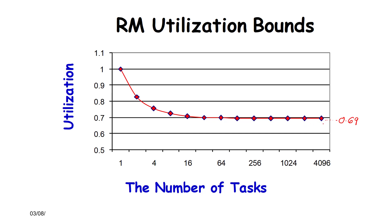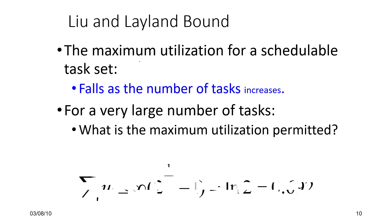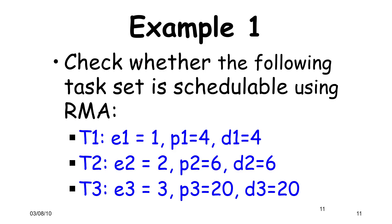The Liu and Layland bound created an upper bound for maximum utilization that falls as the number of tasks increases. For infinity, it becomes log of 2, which is 0.692.